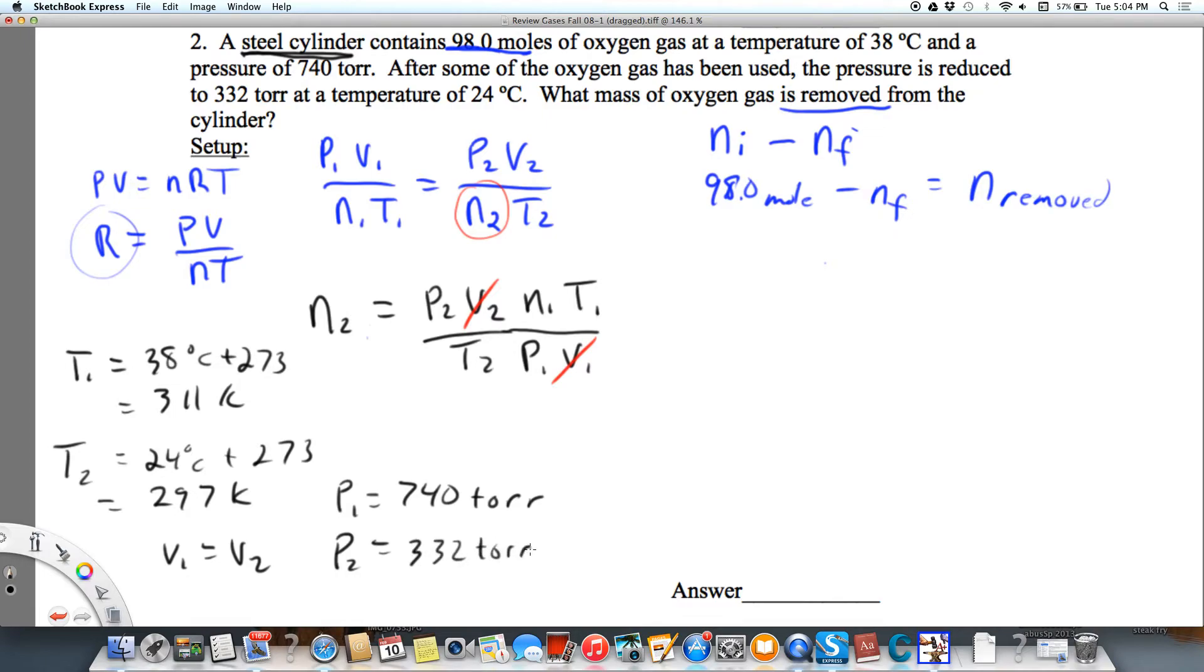So now I'm going to plug all these values and get my moles of oxygen after we remove some. That's going to be 332 torr times my initial moles, which is 98.0 moles of O2, times my initial temperature, which was 311 K.